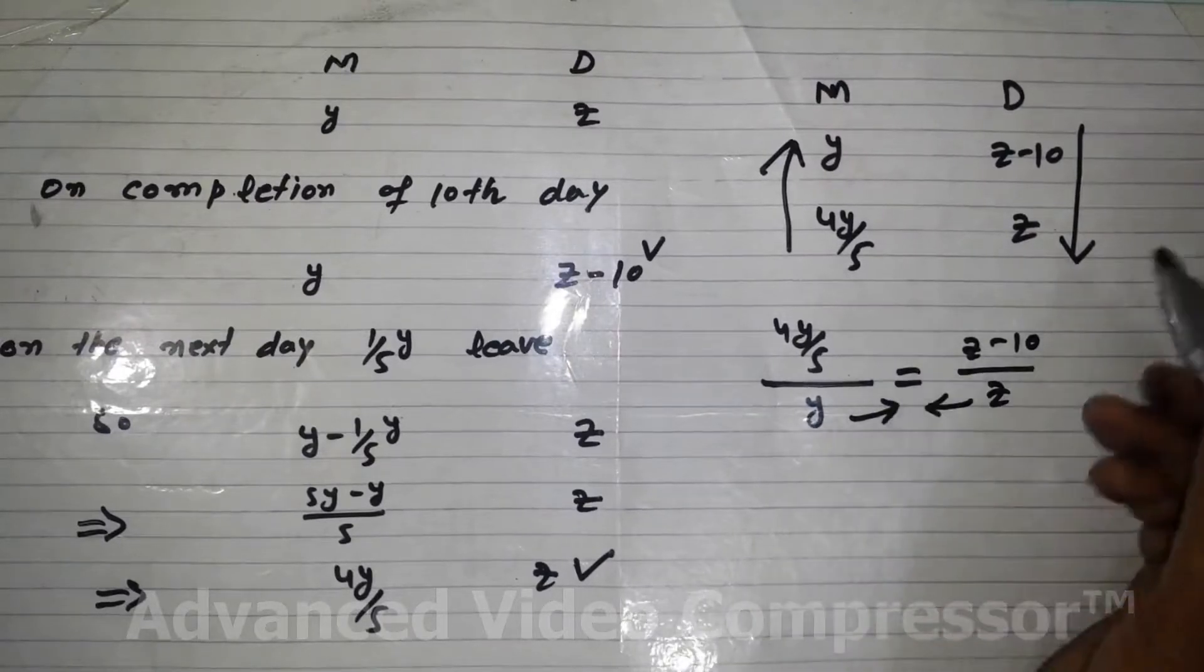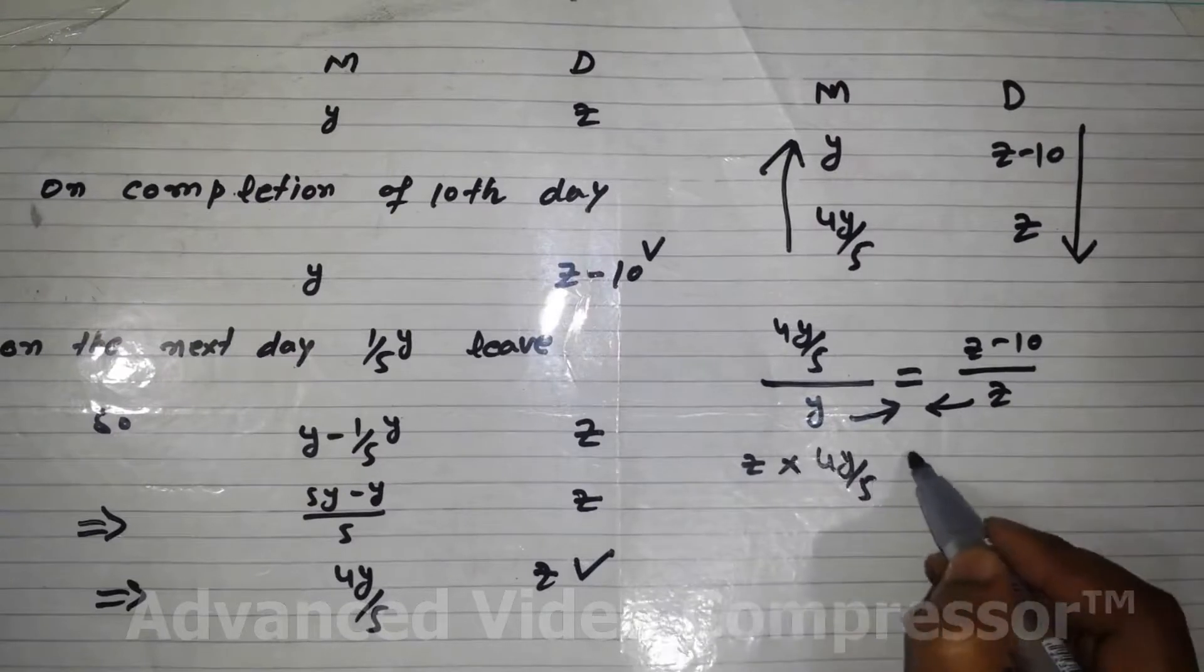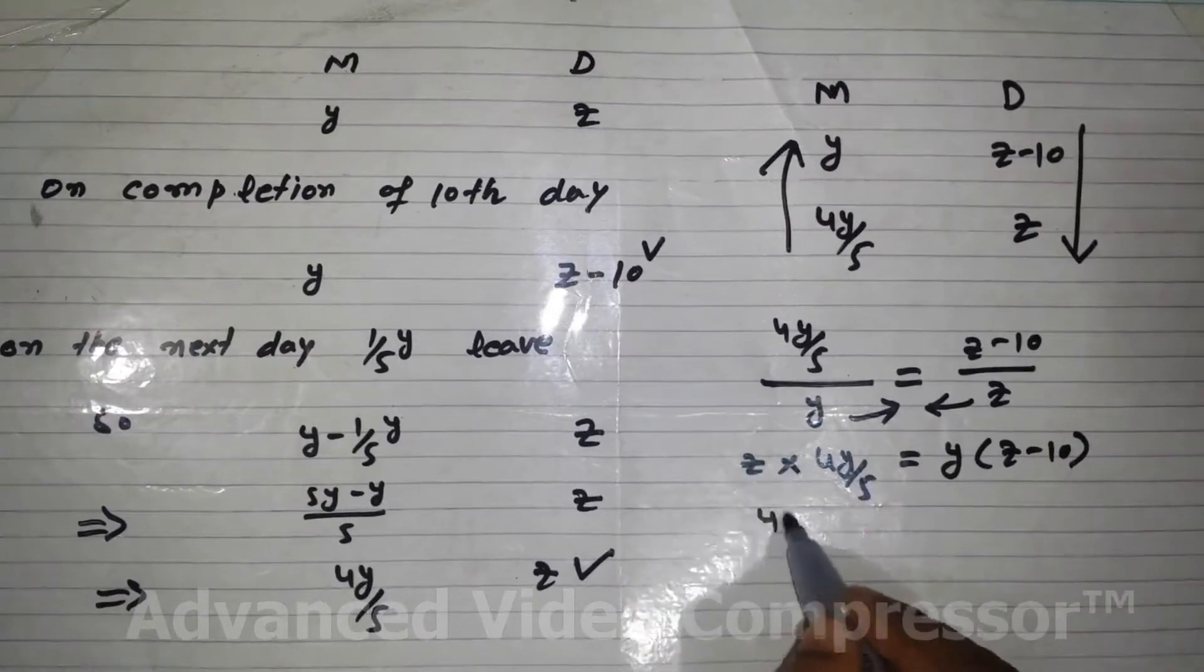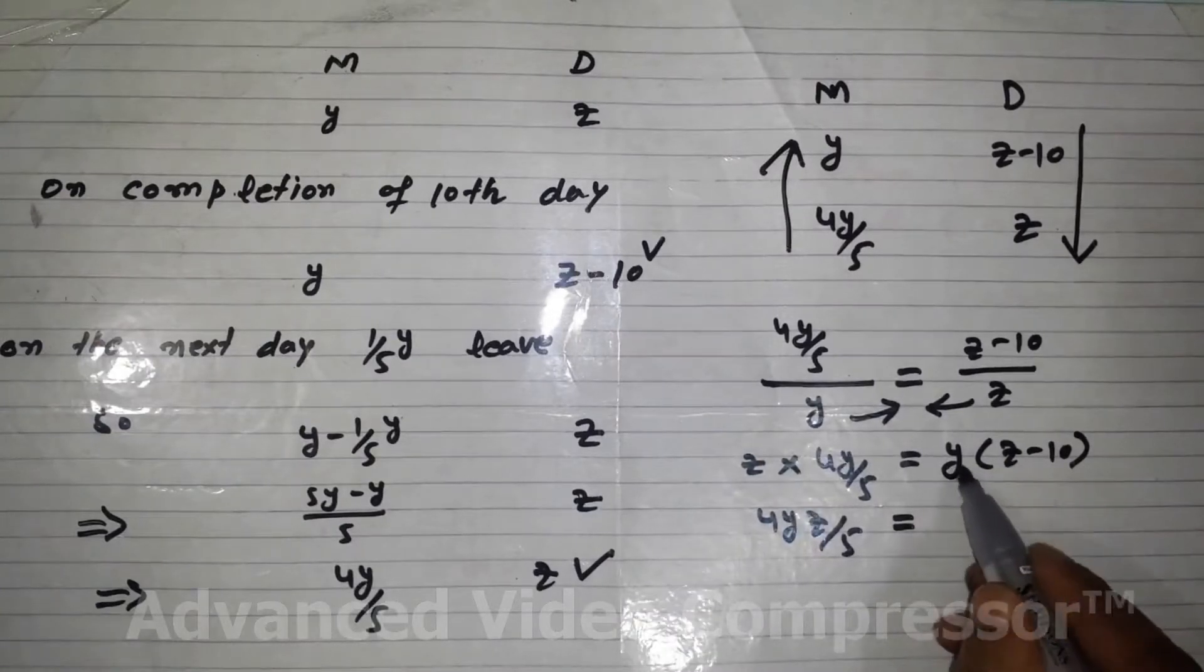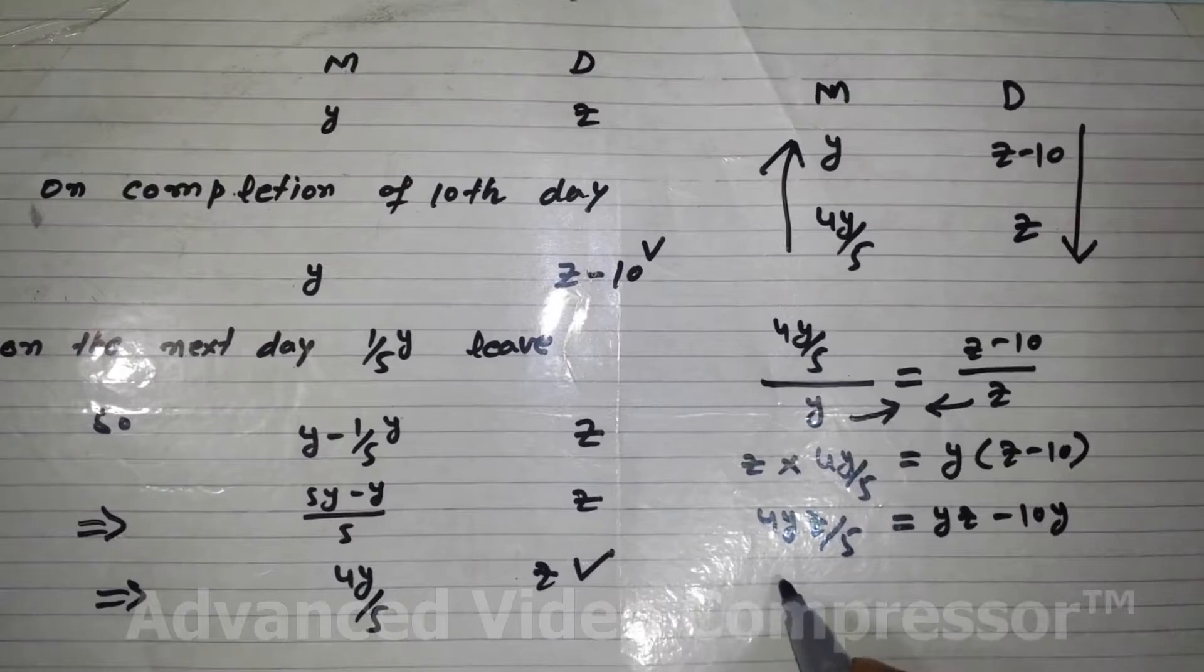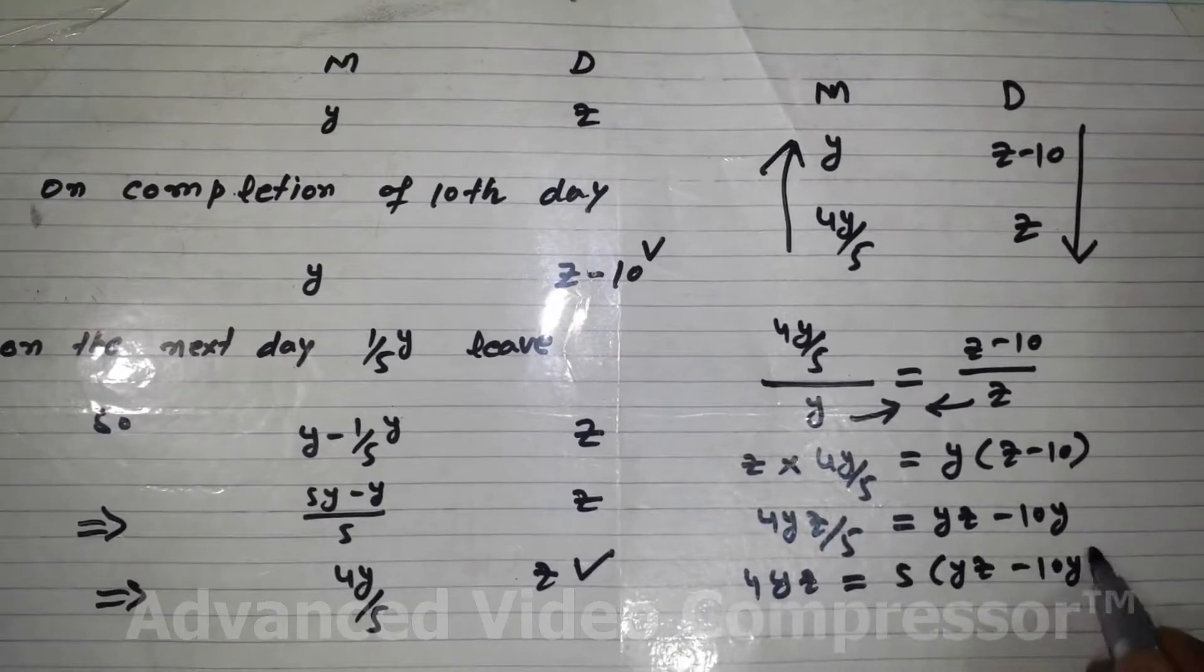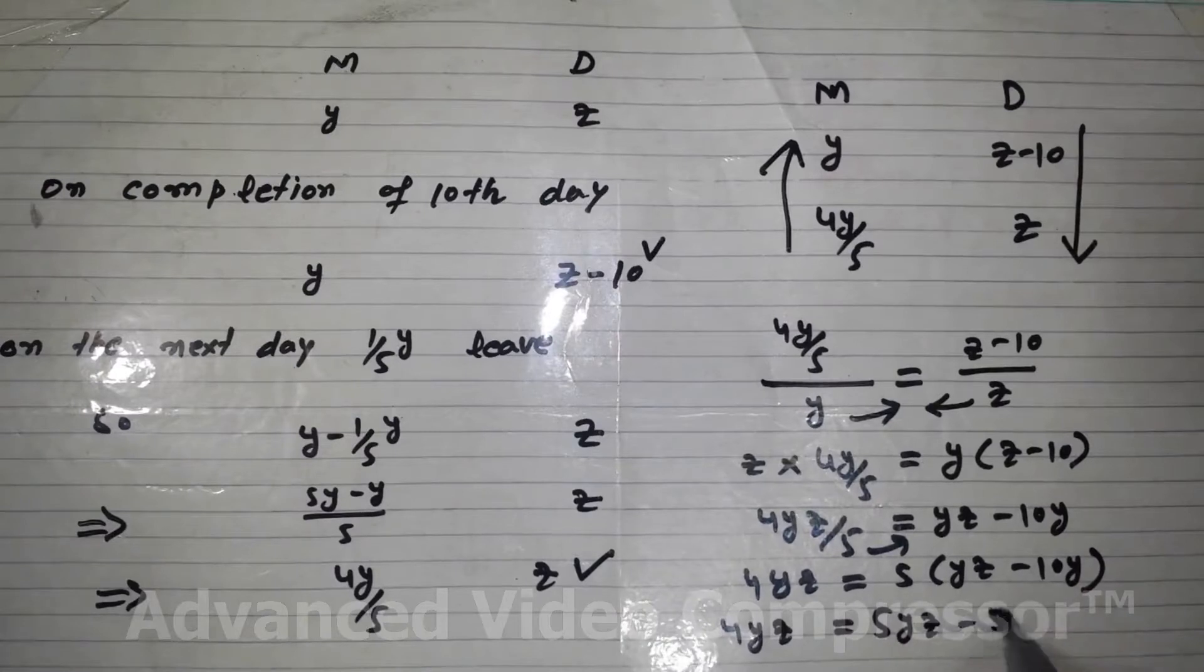So it gives us Z into 4Y over 5 equal to Y(Z minus 10). Now here we get 4YZ over 5 equal to YZ minus 10Y. We get 4YZ equal to 5YZ minus 50Y. The 5 is multiplied inside with every term on the right side.